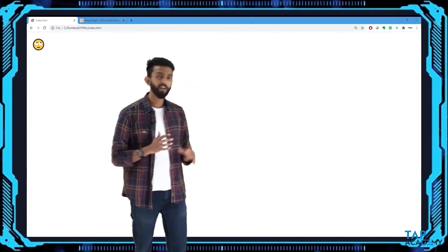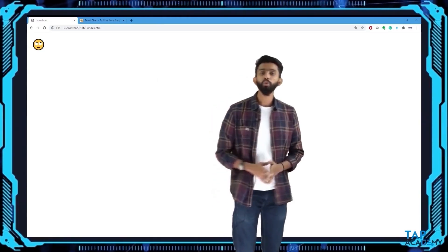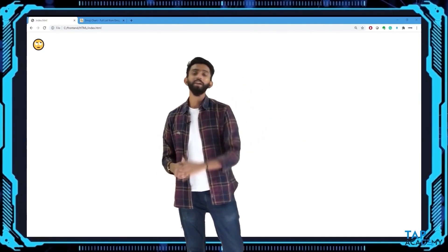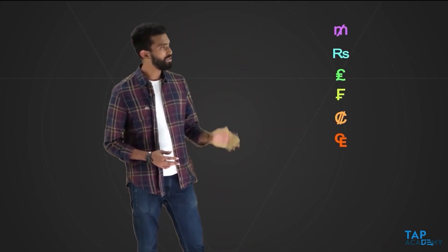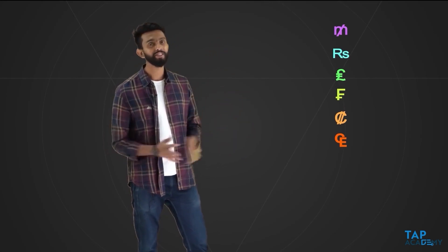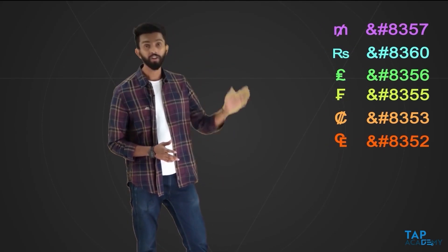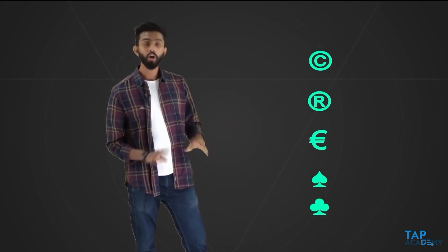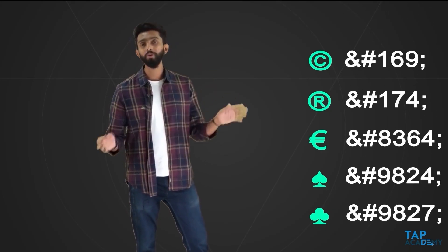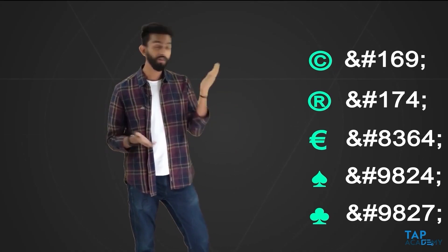HTML entities also cover currency symbols for different currencies across the world, as well as symbols like copyright and reserved marks — each has a corresponding HTML entity code. I'll put a couple of commonly used symbols in the notes. HTML entities are clear to you guys now — please go check the notes.